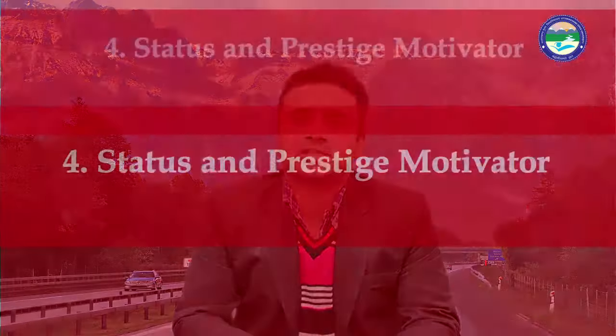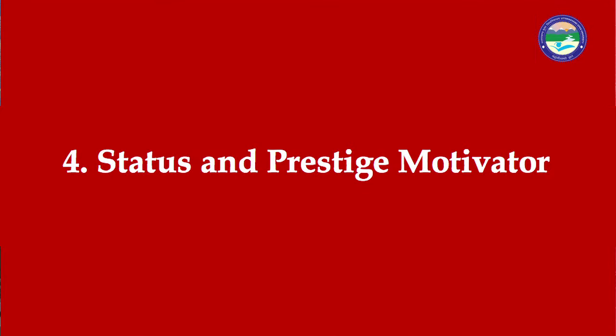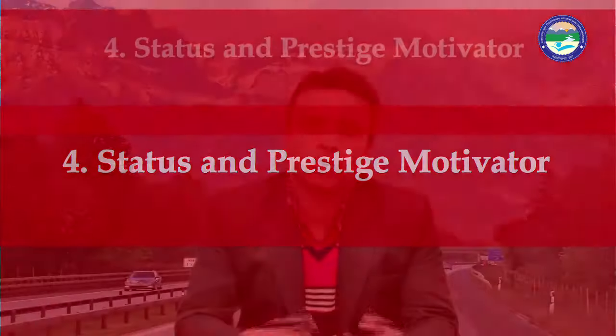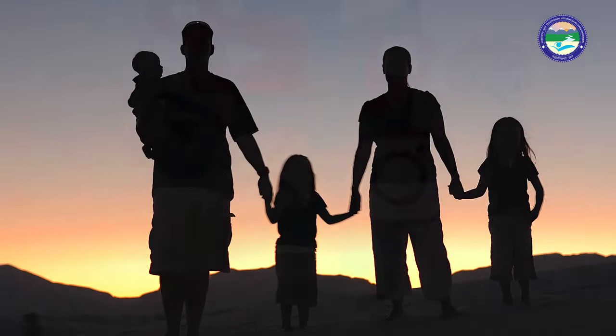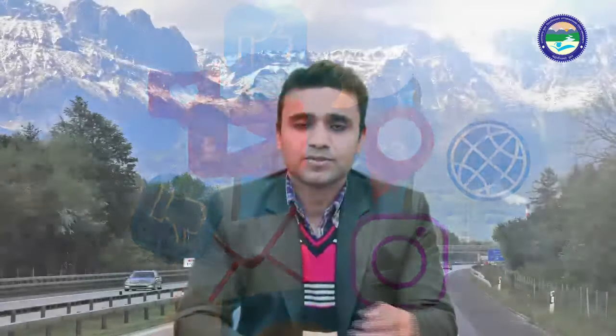Now we will understand about status and prestige motivator. If any person travels to any destination just to show others that he has traveled, or just to satisfy his own ego, that kind of motivational factor is known as status and prestige motivator. For example, people update their status on Facebook and WhatsApp, upload pictures, and when they are on a flight or have landed at a tourist attraction, they post about it. So people travel to satisfy their ego and to show society that they have traveled.